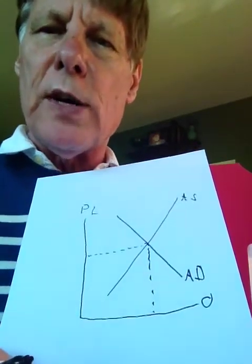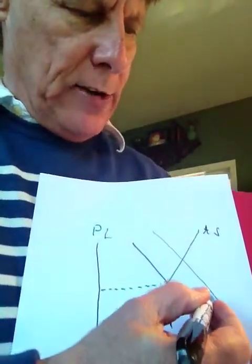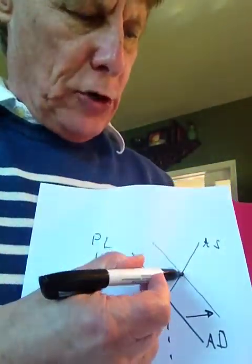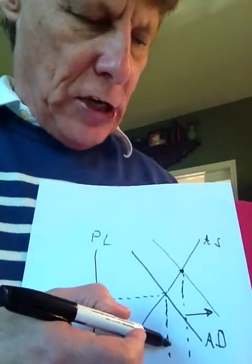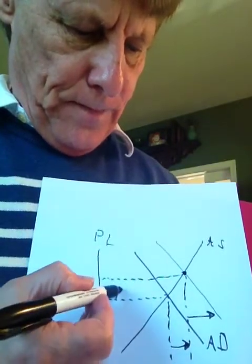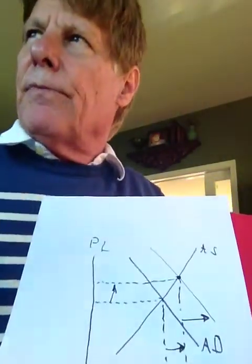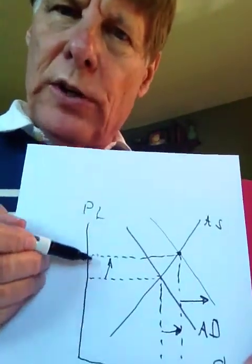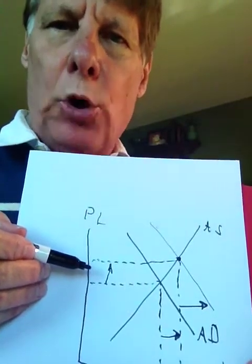Let's suppose there is an increase in aggregate demand for some reason. The aggregate demand curve would shift to the right — there's the new aggregate demand curve. Here would be the new intersection. As a result, the equilibrium level of economic activity would go up, and the equilibrium price level would go up as well. The economy would speed up, but there would be some inflation. This increase in the price level is inflation.